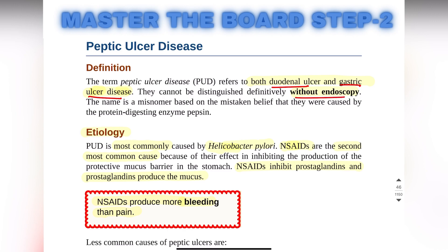The name 'peptic' came from a mistaken belief that a protein-digesting enzyme called pepsin caused this disease — that's how the peptic ulcer disease name came about. The most common cause of peptic ulcer disease is Helicobacter pylori, and the second most common cause is NSAIDs.